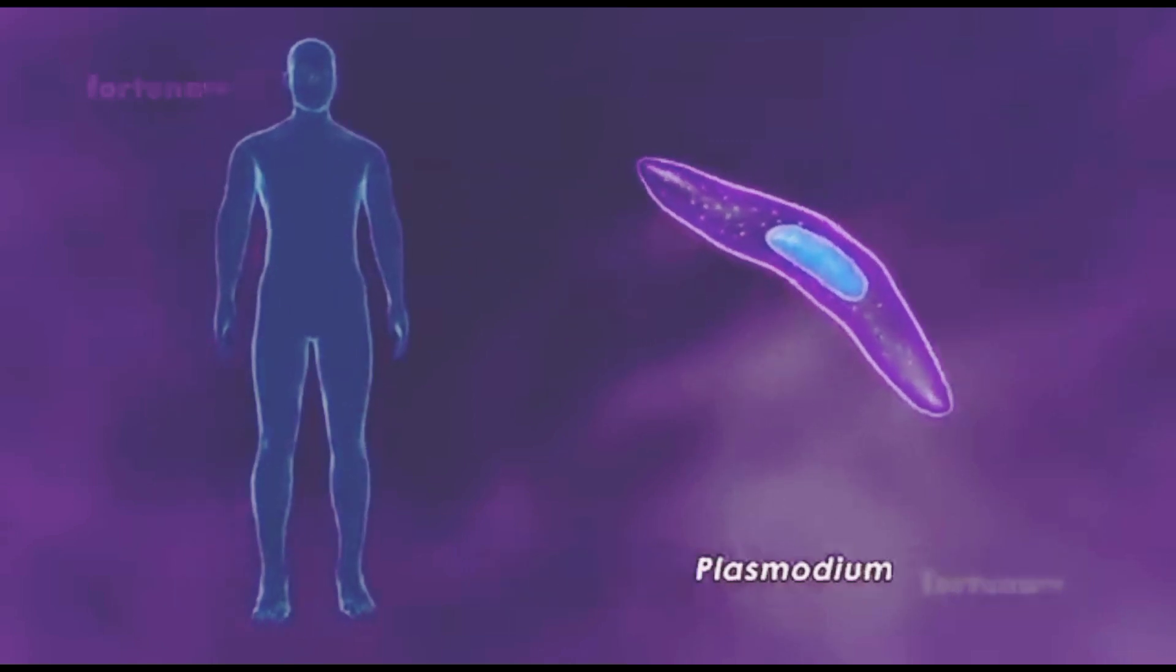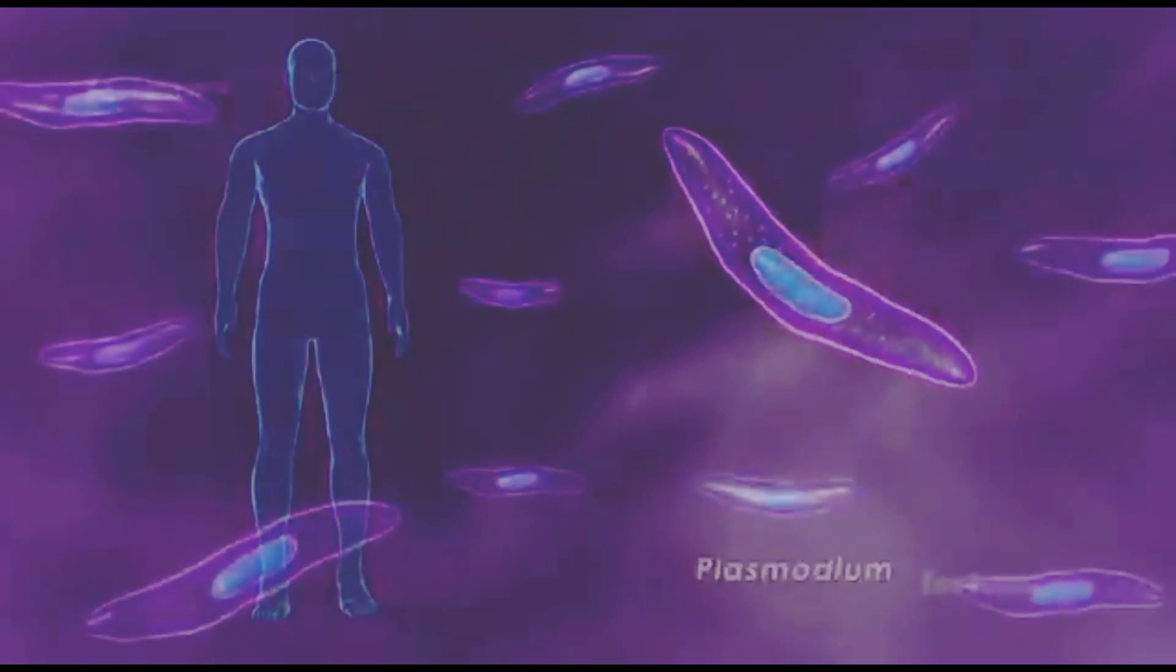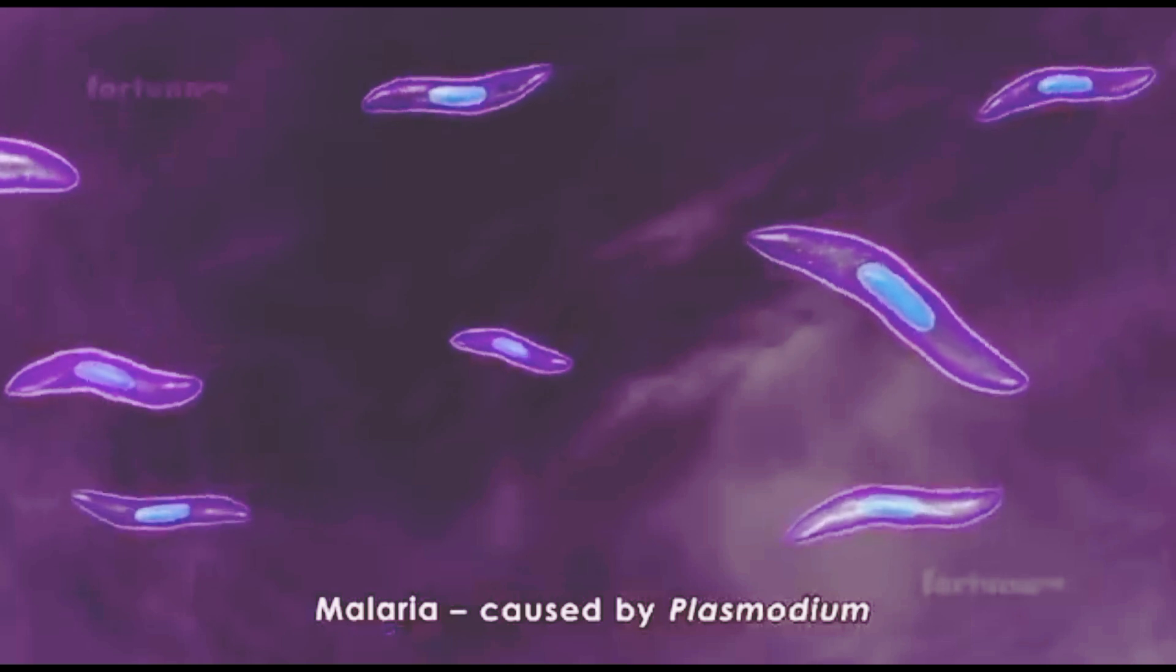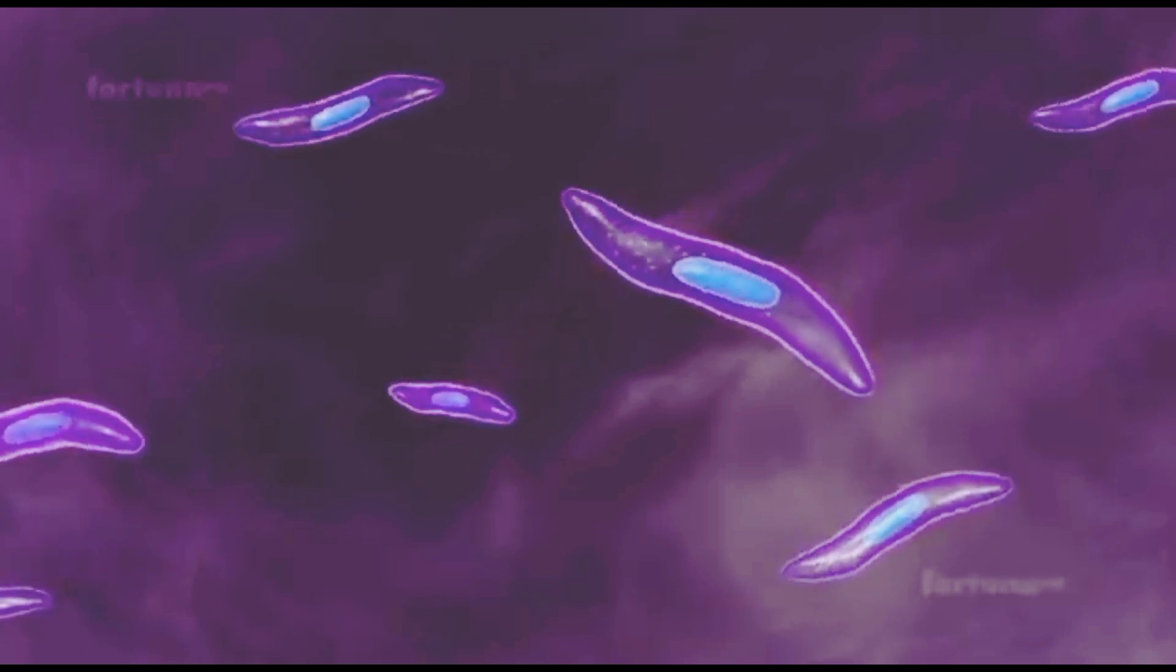Let's recap the life cycle of Plasmodium in humans. Malaria is a disease caused by the unicellular parasite Plasmodium, which belongs to the phylum Sporozoa.